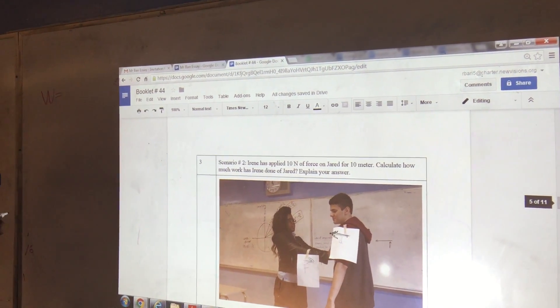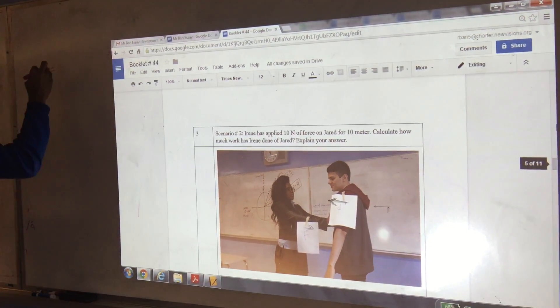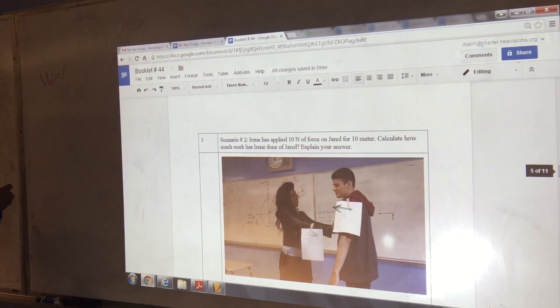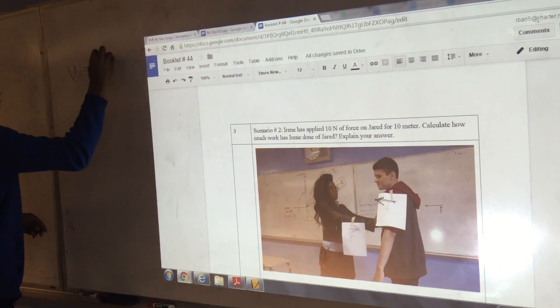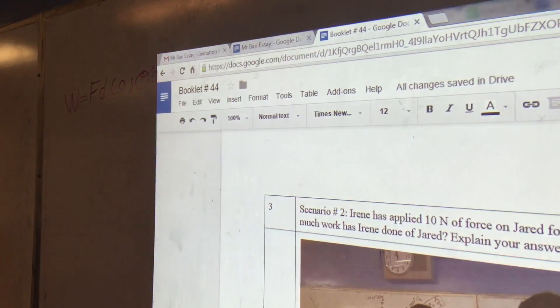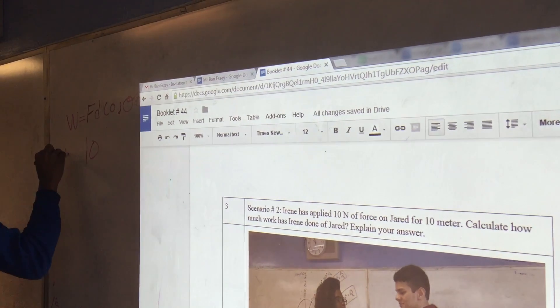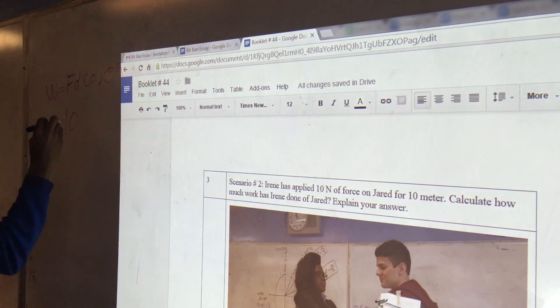We have to use the work equation to find out how much work she did, which is F times D times cosine of theta. We know that the force is 10 newtons, so we plug in 10 for that. And then the displacement is 10 meters, so we plug in 10 for that. And then cosine is 180.